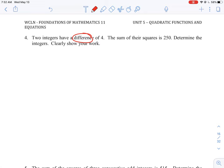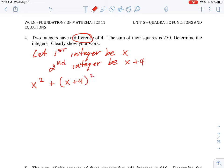So the way we set this question up is we let first integer be x, and then the second integer has to be a difference of four. So we could just say that is x plus four. And then to set up the equation, we would say the sum of their squares is 250. So we're going to square the first term and then add the second term to it, and we square that. That is the sum of squares is equal to 250.